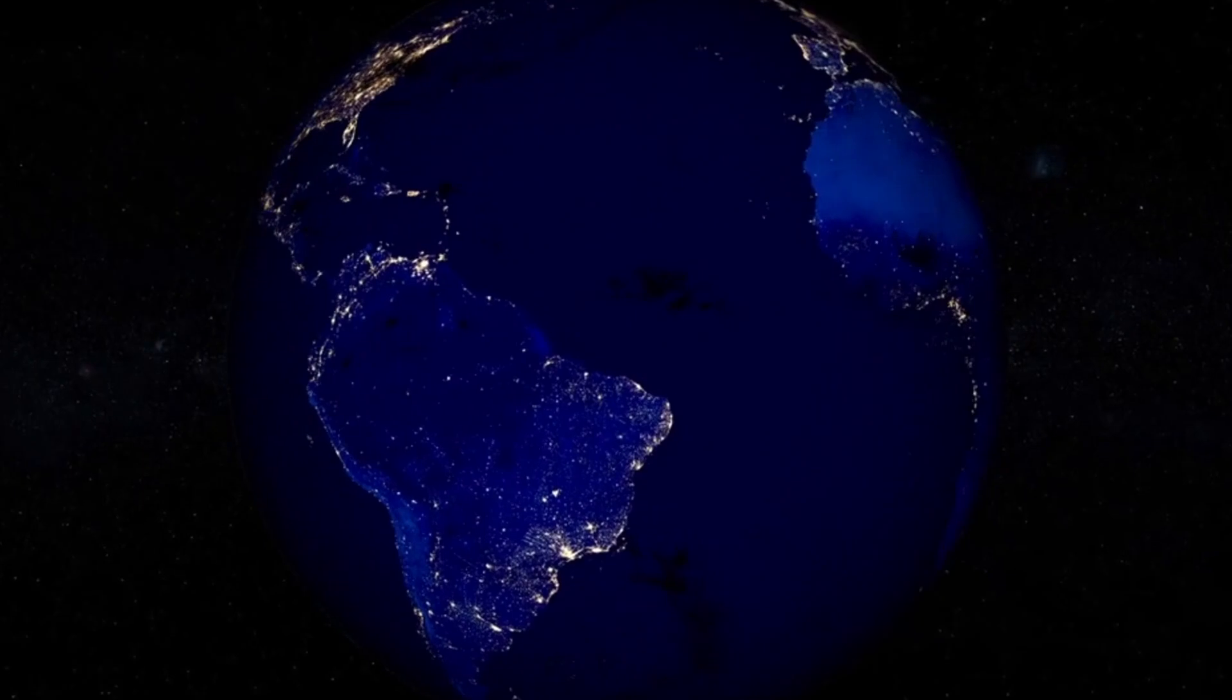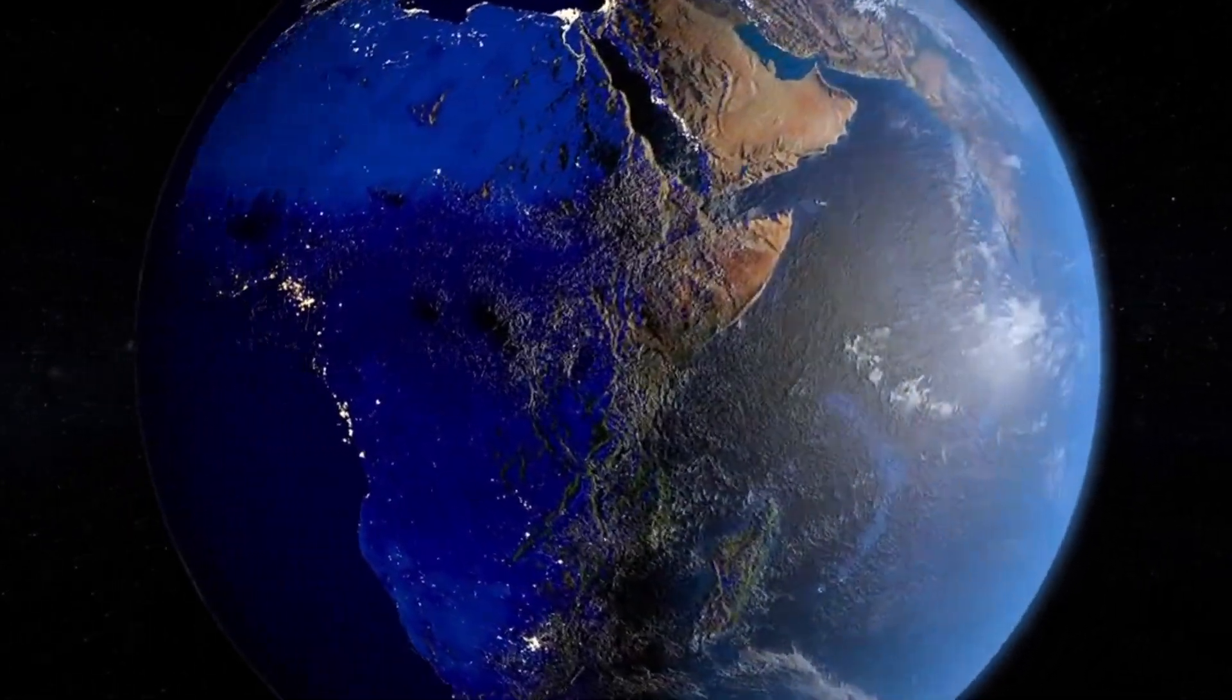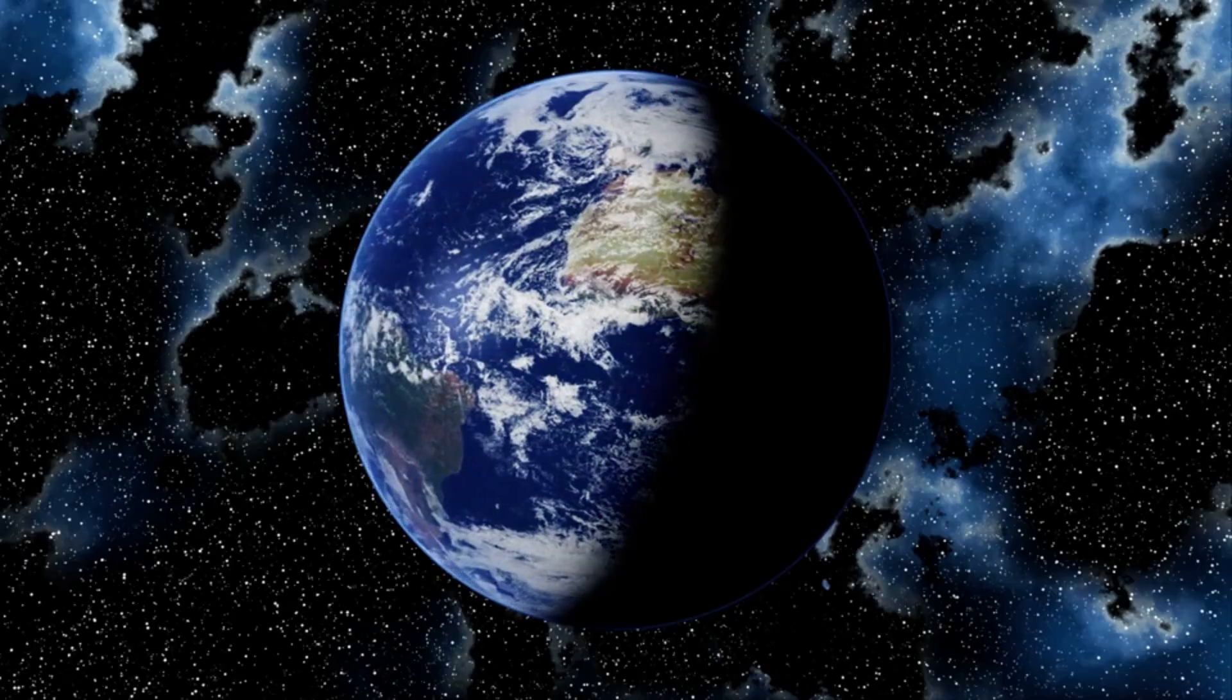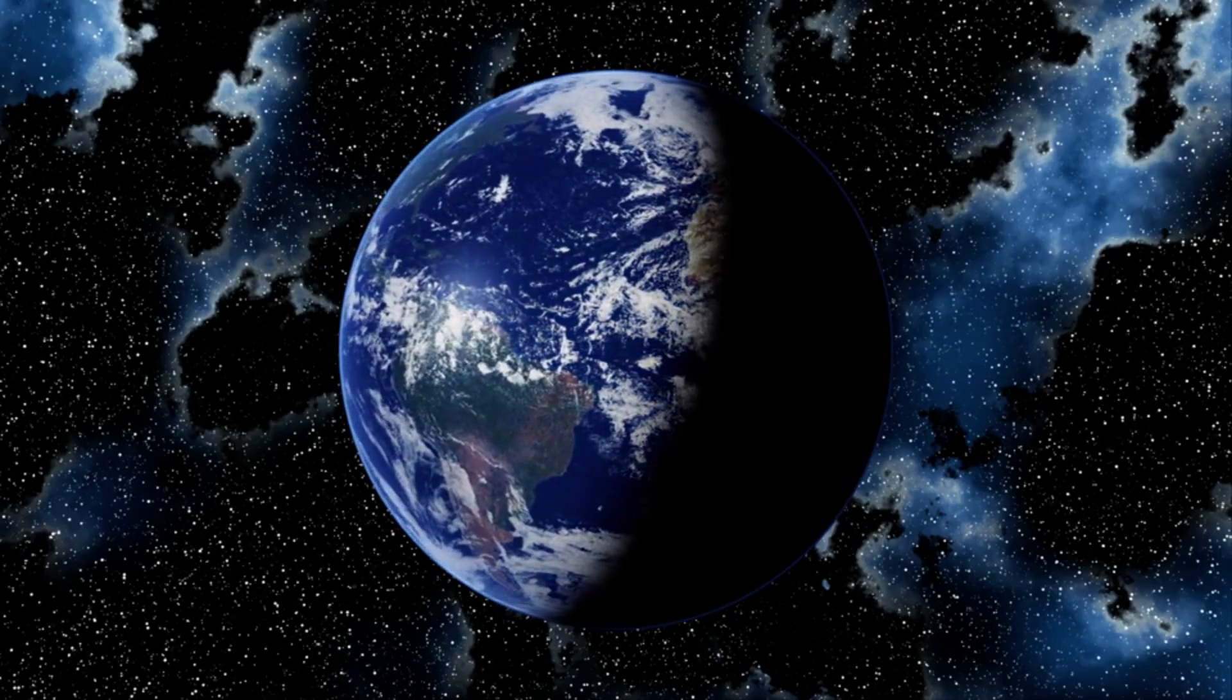Imagine this: when our side of Earth faces the sun, it's bright and sunny, which is day. But when Earth spins away from the sun, it becomes nighttime.